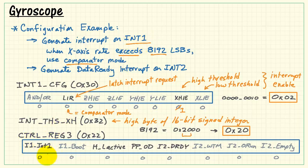We want to generate the interrupt on interrupt number 1. We need to enable it here in control reg 3. By default, it is active high.